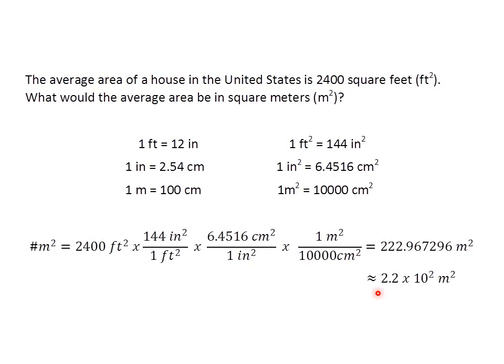I need to report this to two sig figs because 2,400 has two sig figs — those are trailing zeros not terminated by a decimal point, nor coming after the decimal point. So using scientific notation, moving the decimal two places, the answer is 2.2 times 10 to the second meters squared.